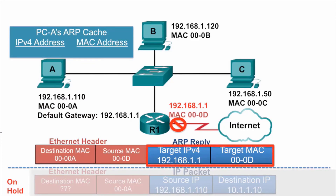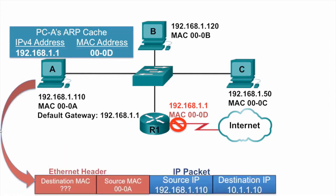PCA, when it receives the ARP reply in response to its ARP request, sees the target IPv4 address and the target MAC address, and adds that to its ARP cache. It now has the information it needs to forward the packet which is on hold. The destination MAC address is now going to be 000d, that of router R1, and now PCA can forward the frame onto router R1.